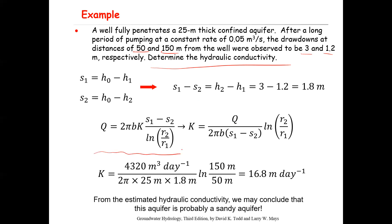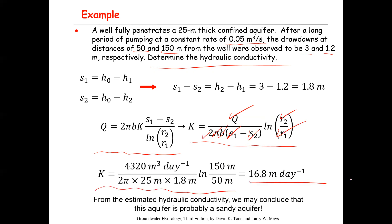All you need to do is write the equilibrium equation and rearrange for K. Note that q must be converted from m³/s to m³/day. Plugging in: b = 25 m, s₁ = 3 m, s₂ = 1.2 m, r₂ = 150 m, r₁ = 50 m, you calculate K = 16.8 m/day.